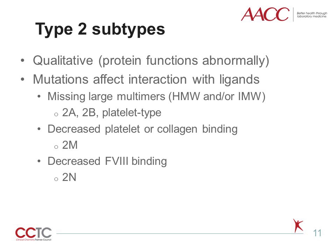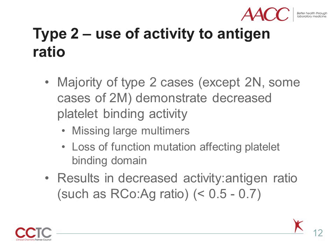Type 1 von Willebrand disease results from a von Willebrand factor deficiency and results in concordant decreases in von Willebrand factor antigen and activity. Because most type 2 subtypes demonstrate decreased platelet binding activity that is out of proportion to the von Willebrand factor antigen level due to missing large multimers or mutations specifically affecting the platelet binding domain, a decreased activity to antigen ratio raises suspicion of a type 2 subtype. A von Willebrand factor ristocetin cofactor activity to von Willebrand factor antigen ratio of less than 0.5 to 0.7 suggests dysfunctional von Willebrand factor and prompts additional testing such as multimeric analysis.